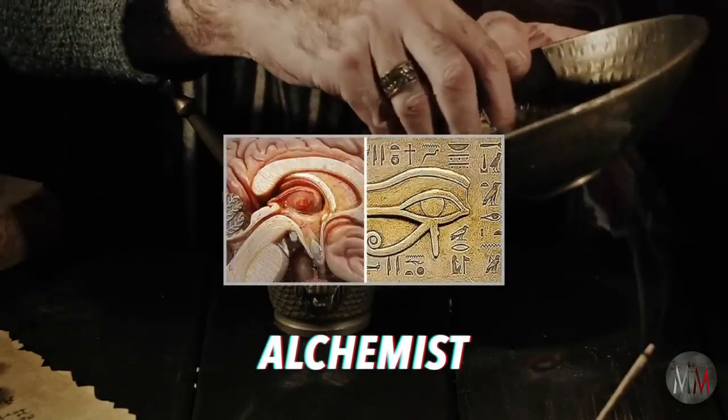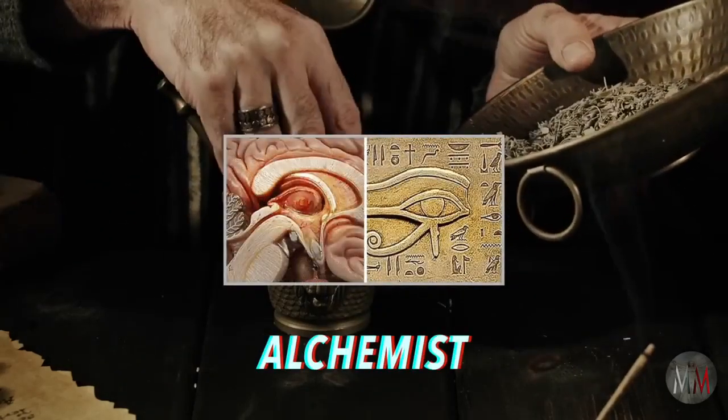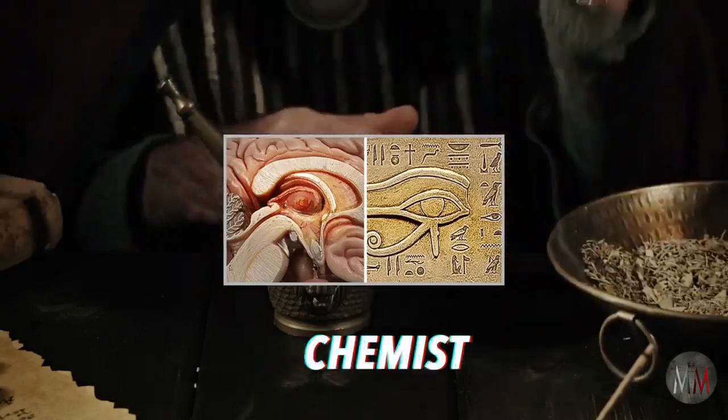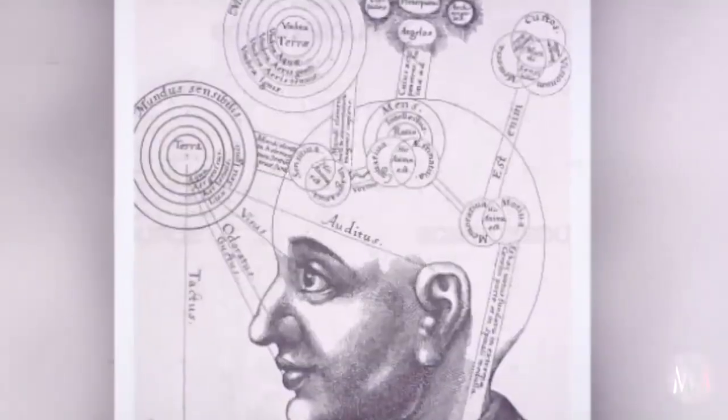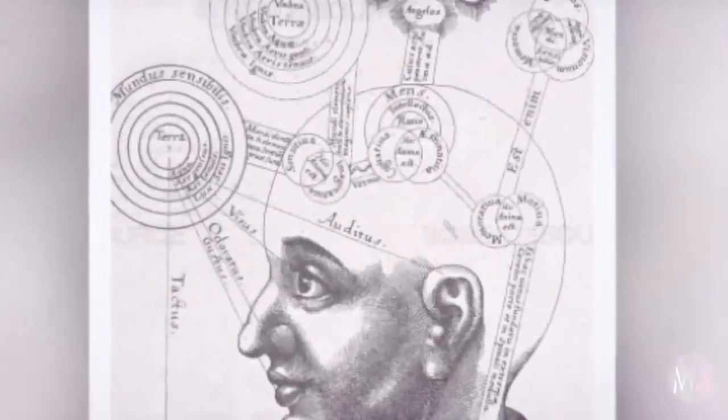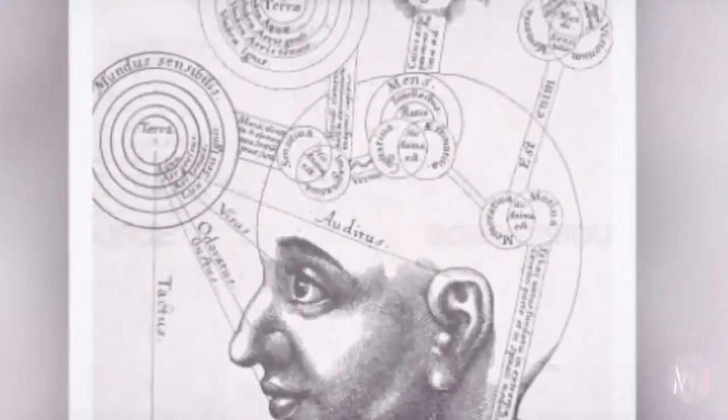It's this translation of information into chemistry that primes you for those transcendental, mystical moments. This is why I like to call the pineal gland an alchemist, because it transmutes melatonin into some very profound radical neurotransmitters.